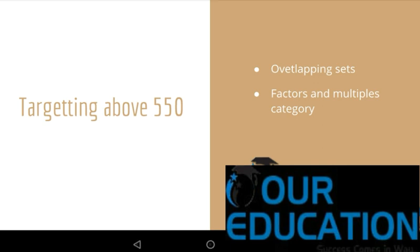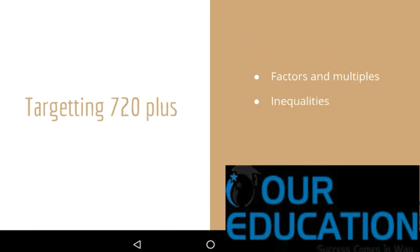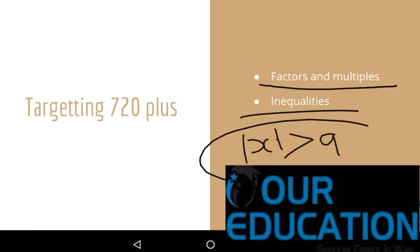If you are targeting 720 or above — for top institutions like Harvard, INSEAD, Indian School of Business, IIMs, IMD in Switzerland, or NUS in Singapore — you absolutely cannot ignore factors and multiples. Inequalities are also heavily tested in the GMAT at that level, so you need to put extra effort into inequalities as well.